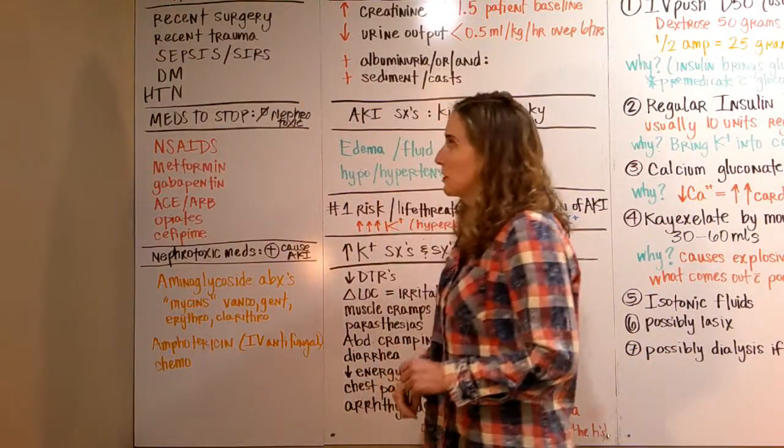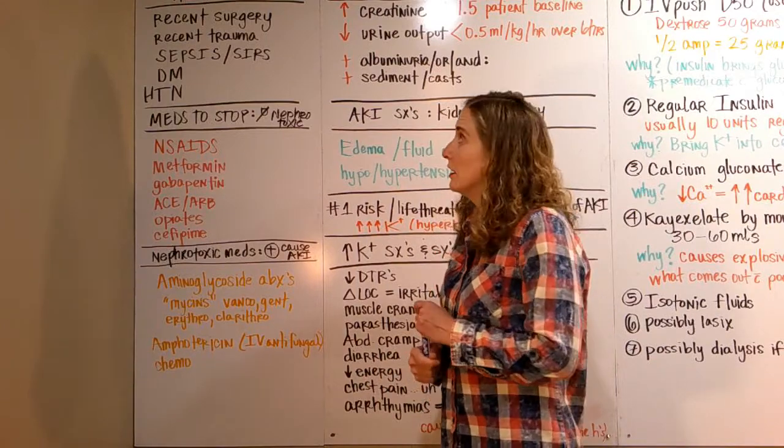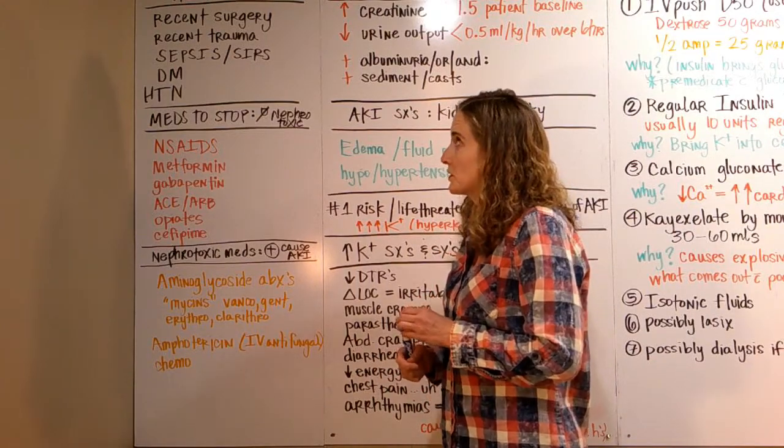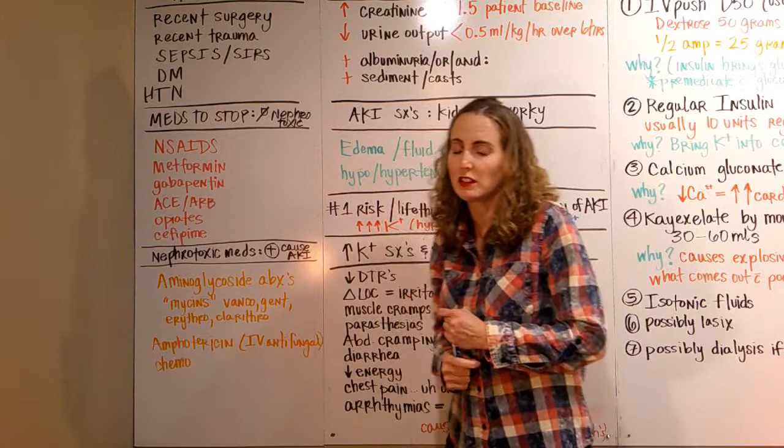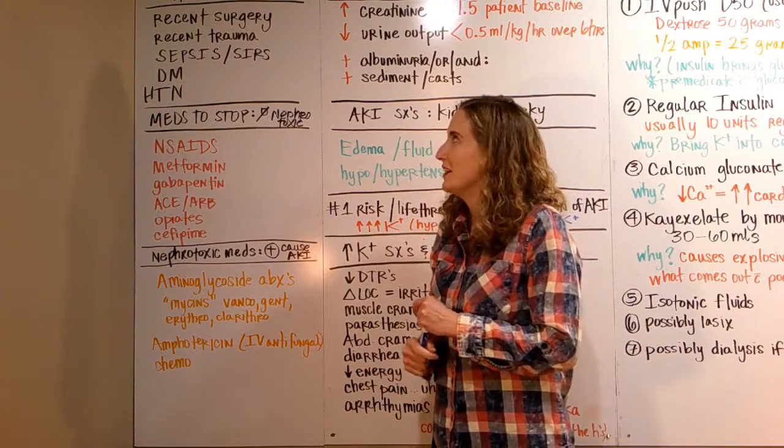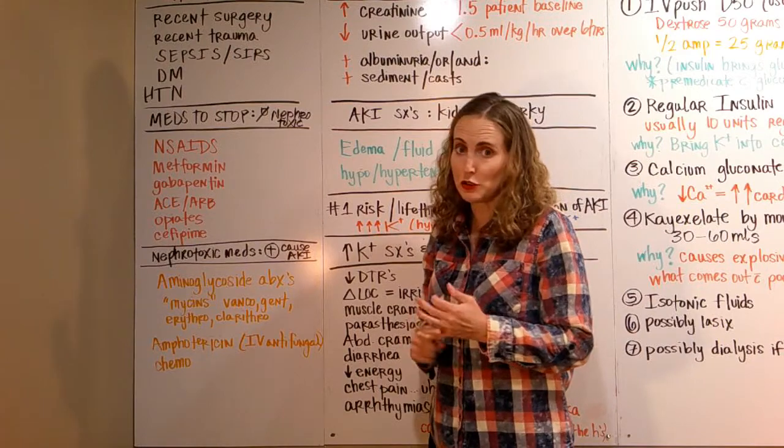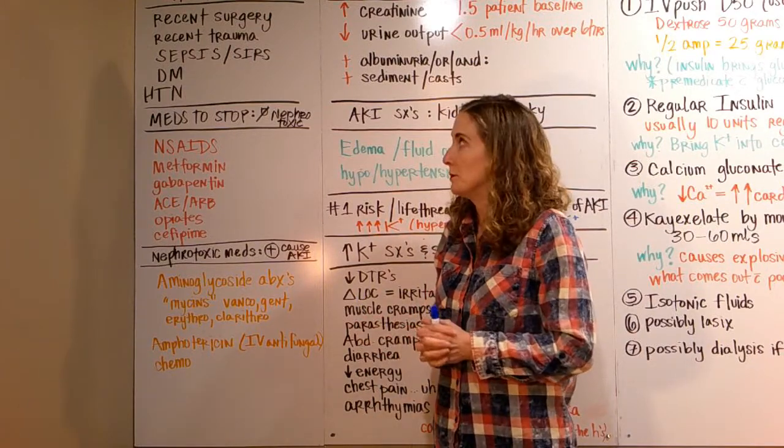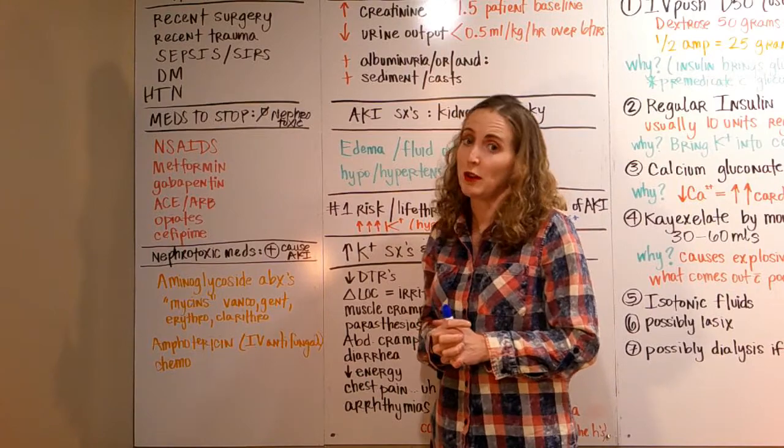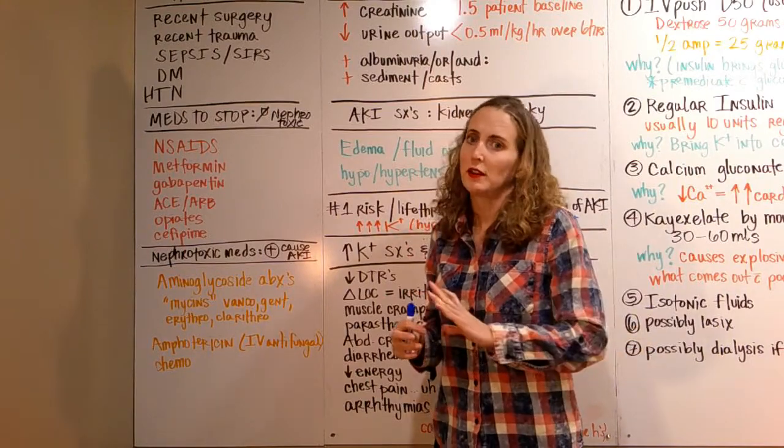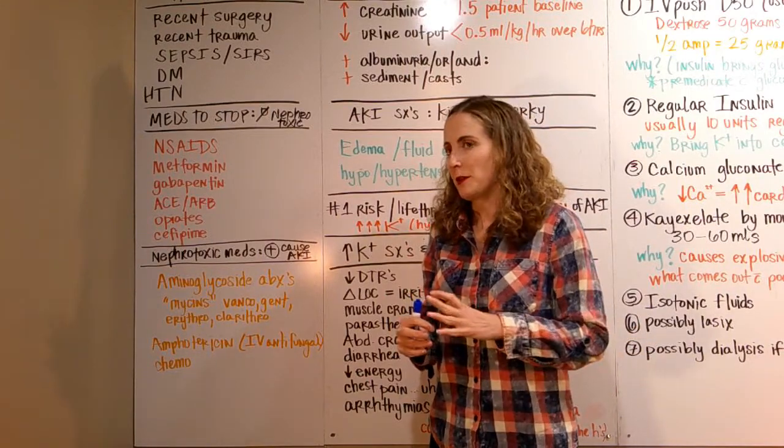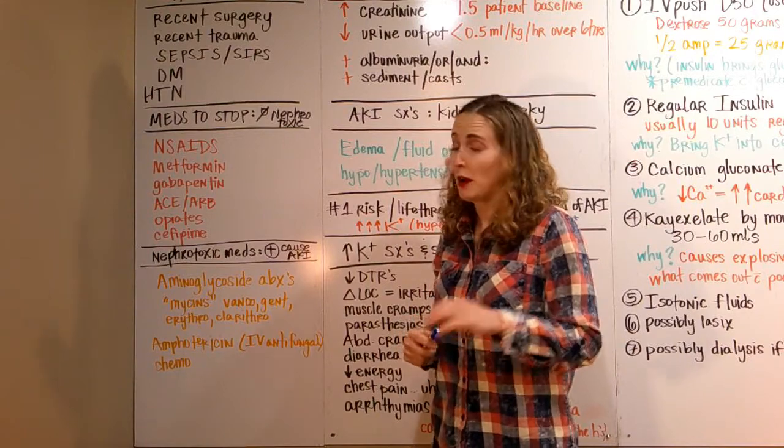Okay guys, we're talking about acute kidney injury today. Some of the risk diagnoses that can cause an acute kidney injury are if you've had recent surgery within the last few days to a week, recent trauma—I'm not talking about emotional or psychological trauma, I'm talking about actual trauma where you were a trauma patient and qualified for trauma criteria.